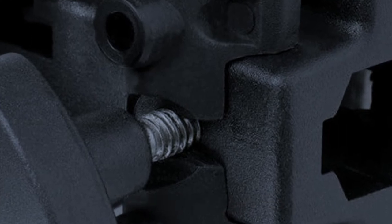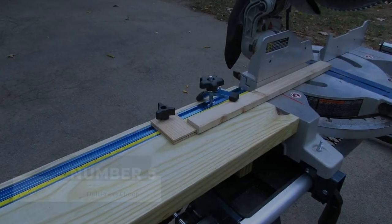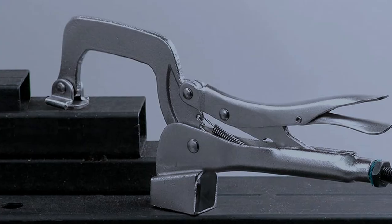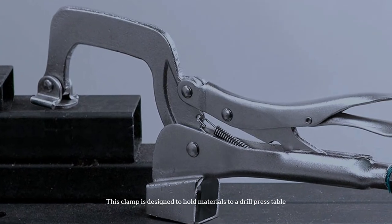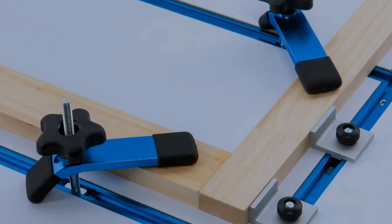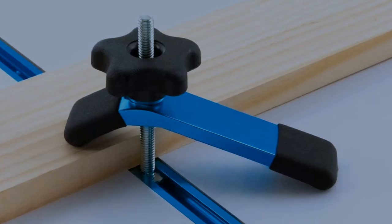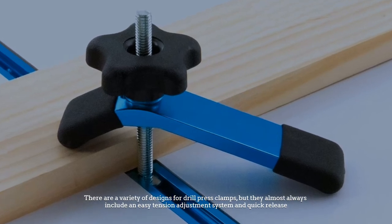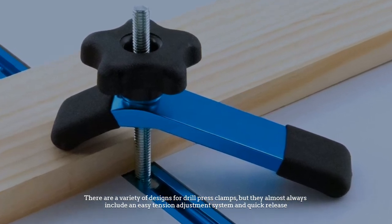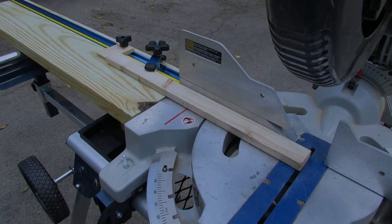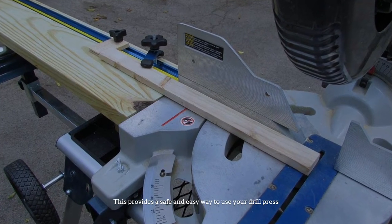Number five: Drill press clamp. This clamp is designed to hold materials to a drill press table. It gives you accurate and clean cuts as you use your machinery. There are a variety of designs for drill press clamps, but they almost always include an easy tension adjustment system and quick release. This provides a safe and easy way to use your drill press.